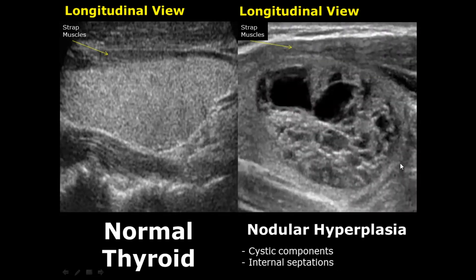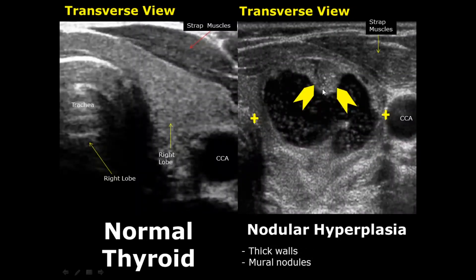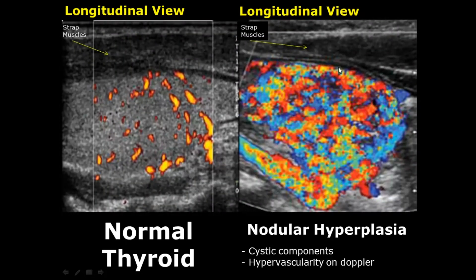Nodular hyperplasia can have many appearances. This image shows internal cystic components and multiple septations. Here is another case of nodular hyperplasia having internal cystic components and a spongy appearance. They can also have thick walls or masses attached to the wall of the nodule — these are called mural nodules. Here is an image showing hypervascularity on color Doppler, which is another feature of nodular hyperplasia.